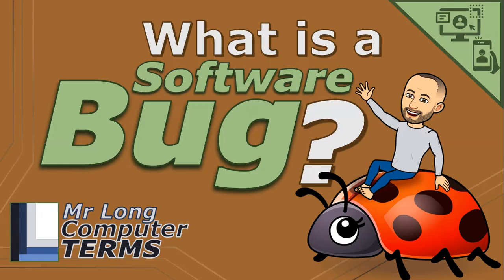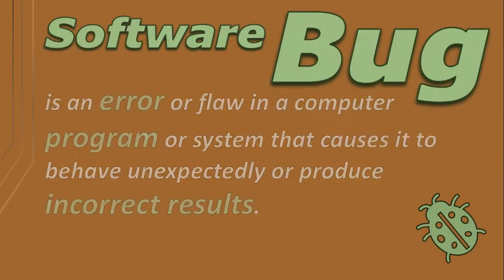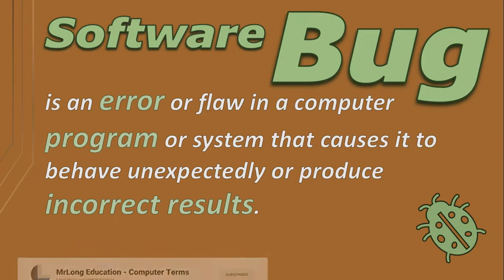What is a software bug? A software bug is an error or flaw in a computer program or system that causes it to behave unexpectedly or produce incorrect results. This is not intentional, and that's what makes it different to a virus, which is designed to be malicious.